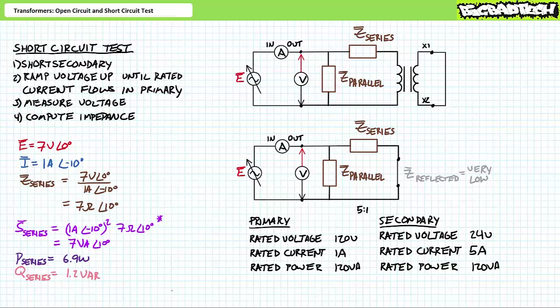A subsequent application of the AC power formula demonstrates the series impedance inside the transformer equivalent circuit experiences 7 volt-amperes of apparent power, of which 6.9 watts is directed towards real power and 1.2 VARs is directed towards a reactive interchange. The 6.9 watts of real power consumed by the series impedance is not being directed towards useful output and would be considered a loss to this system.